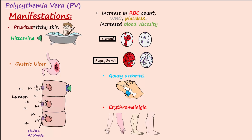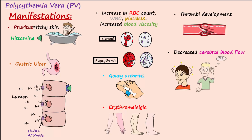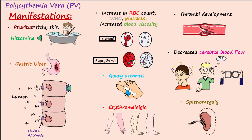Patients are also prone to the development of thrombi because of the increased blood viscosity. Cerebral blood flow is decreased due to the increased viscosity, leading to manifestations such as dizziness, headache, fatigue, and hearing and vision difficulties. Splenomegaly is another manifestation due to the high levels of red cells being trapped in the spleen.